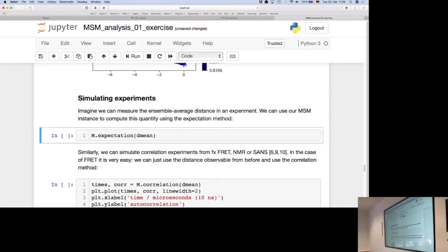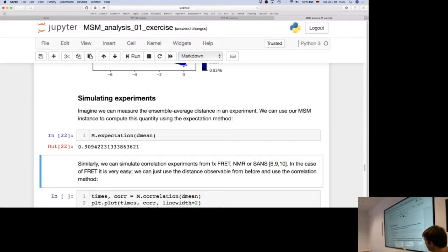And then, so for instance, if we then can measure this in an experiment, actually we can measure this distance using an NMR experiment, or a small angle x-ray scattering or a FRET experiment, then we can, using the Markov state model object, we can compute the experimental value by just using the expectation function of the Markov state model object, and then we get back the average value, according to the Markov state model, of this observable, which is just 9 angstrom. And if this then agrees with our experiment, then we are happy.